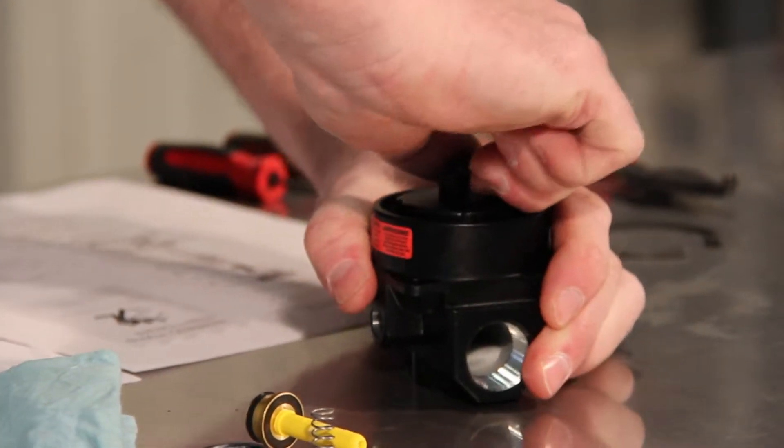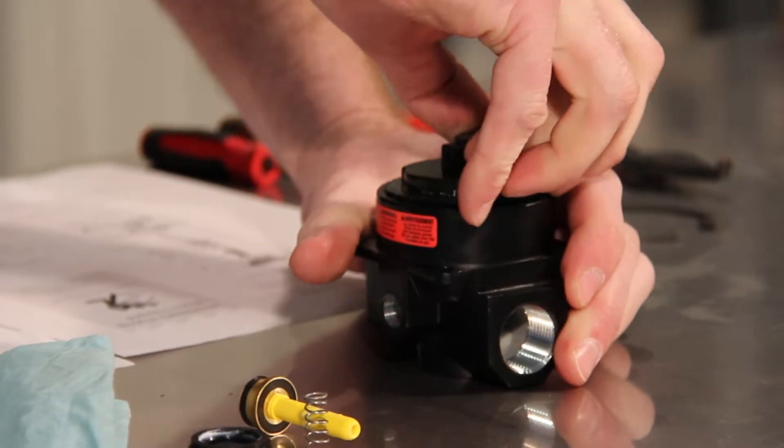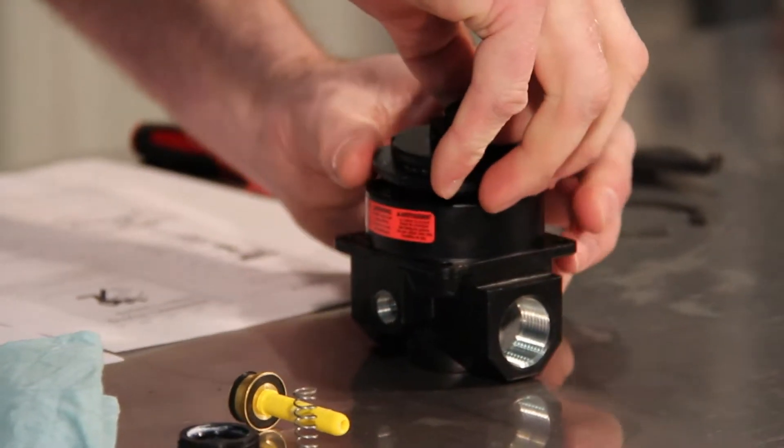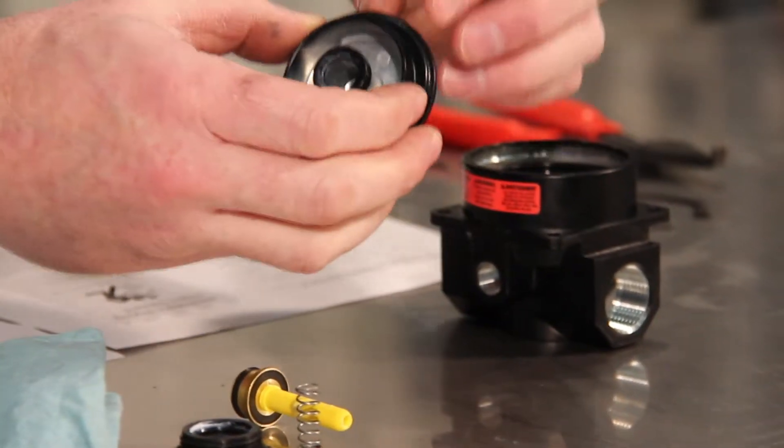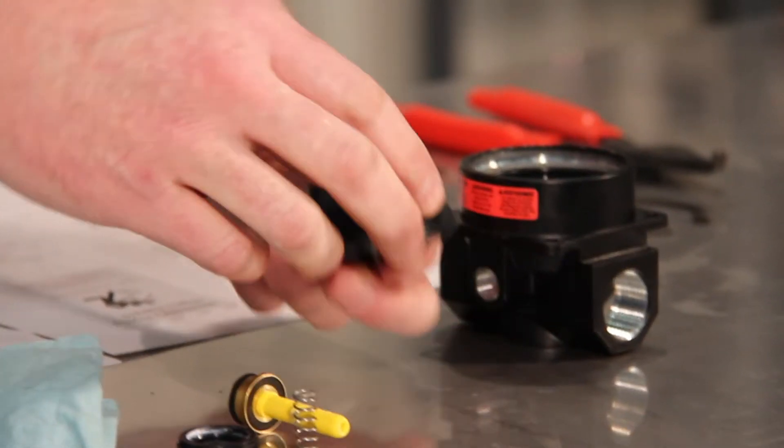We'll remove the regulator bottom assembly here. Now, keep in mind there's O-rings and two pistons, a bottom piston and a top piston here. O-ring around the top, there's an O-ring there.